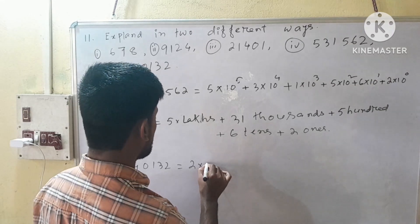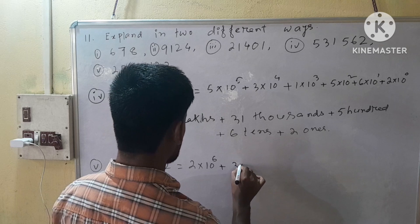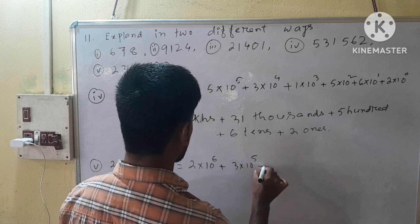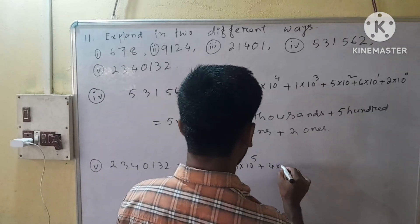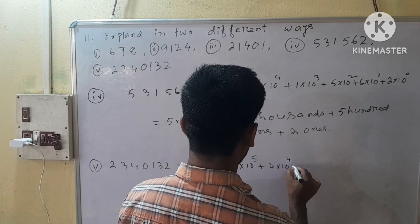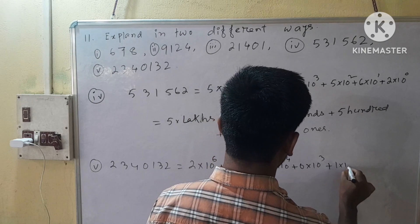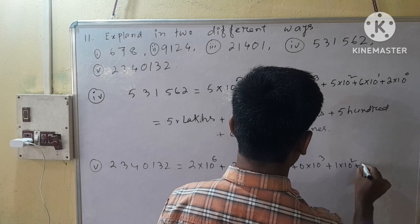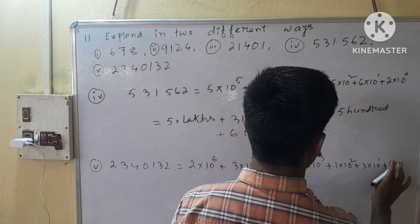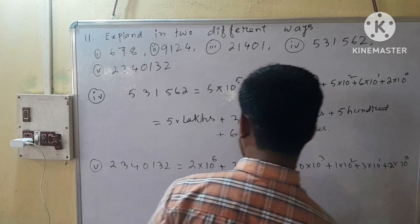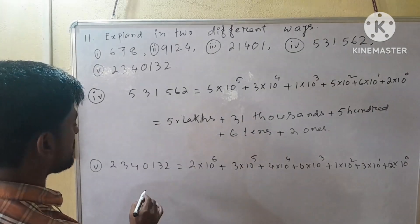The second expansion: 10 to the power 4, plus 0 into 10 to the power 3, plus 1 into 10 to the power 2, plus 3 into 10 to the power 1, plus 2 into 10 to the power 0. That is one different way. We express in another different way.